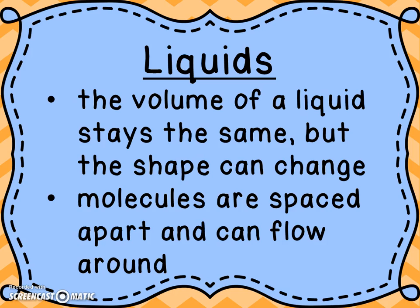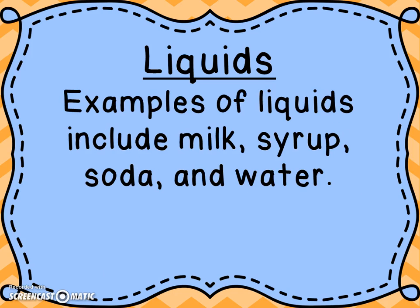Liquids. The volume of a liquid stays the same — the amount of space it takes up — but the shape can change. If you pour it in a tall, skinny glass, the shape is going to be very different than if you pour it in a very short, long glass. In a liquid, the molecules are spaced apart and they can flow around and move past each other. Some examples of liquids include milk, syrup, soda, and water.